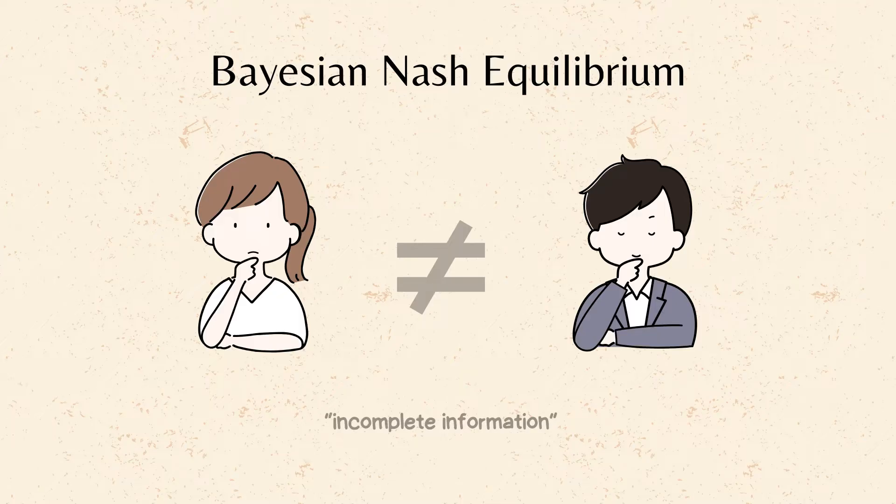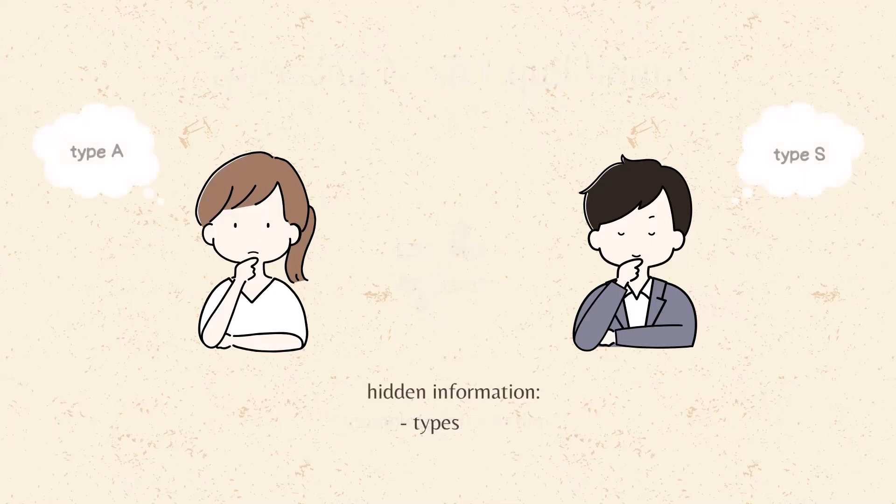In such games, each player may have private information known only to them, which is represented as their type.